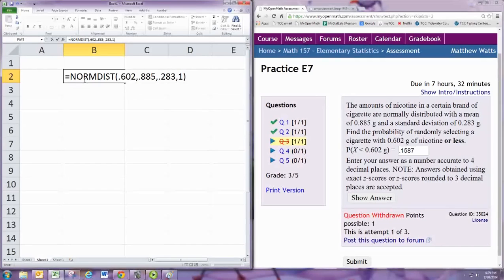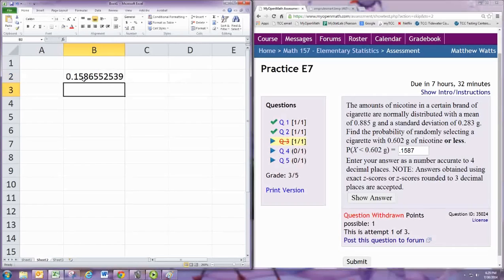Remember it automatically finds the probability that x is less than whatever number you put in first, so that'll find the probability that x is less than 0.602. Of course that rounds to 0.1587.